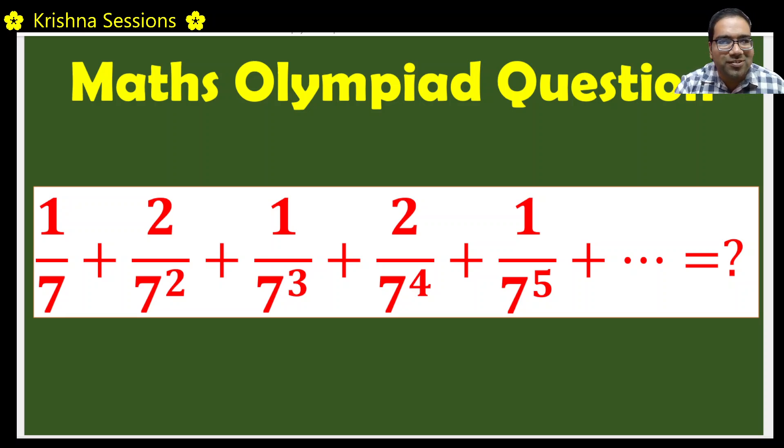Good morning friends. Let us solve this simple Olympiad problem. 1 by 7 plus 2 by 7 square plus 1 by 7 cube plus 2 by 7 power 4 plus 1 by 7 power 5 plus it is continuing till infinity. What is the sum of all?